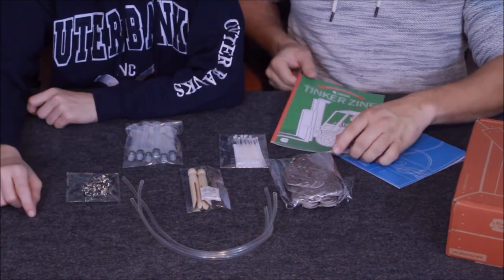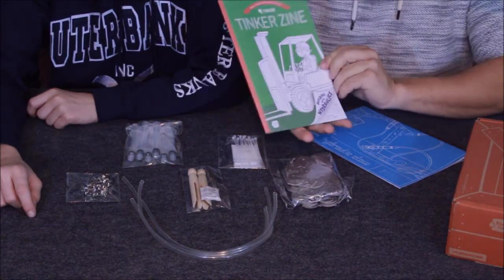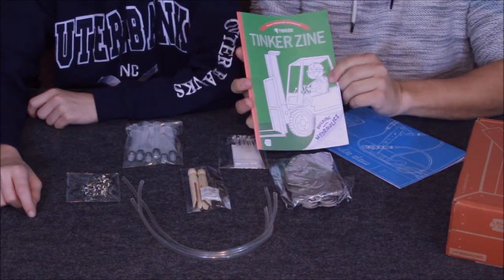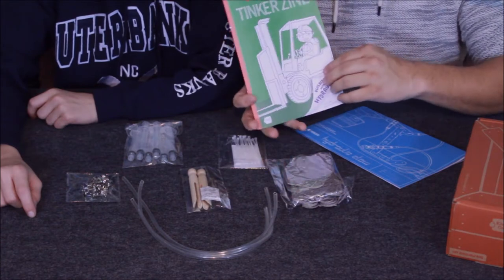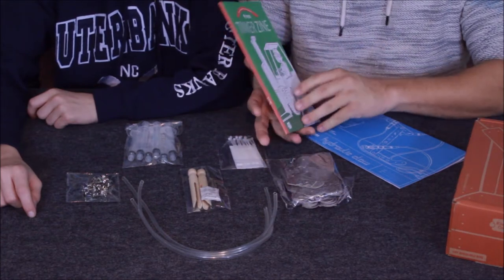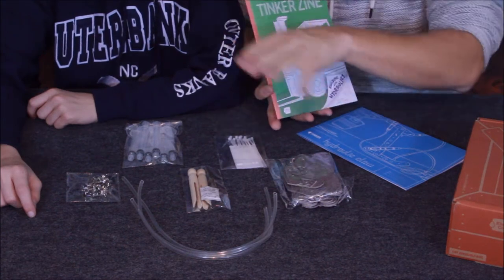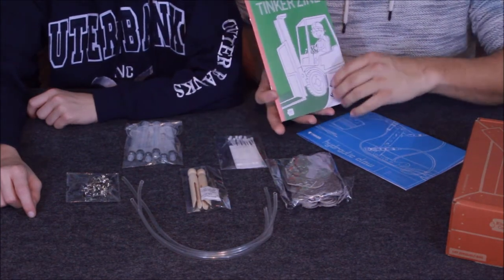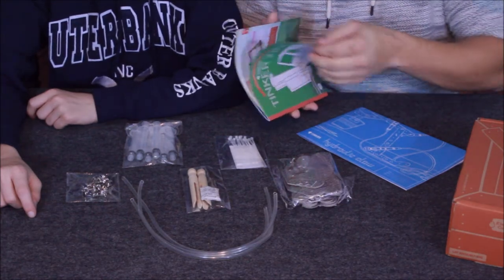I'm gonna go ahead with this one right here real quick. This is the Tinker Zine, and as you can see there is a forklift on the front. Forklifts use hydraulics to lift the boxes and other objects that they pick up. That's actually what this is all about - using hydraulics for that arm or the claw.